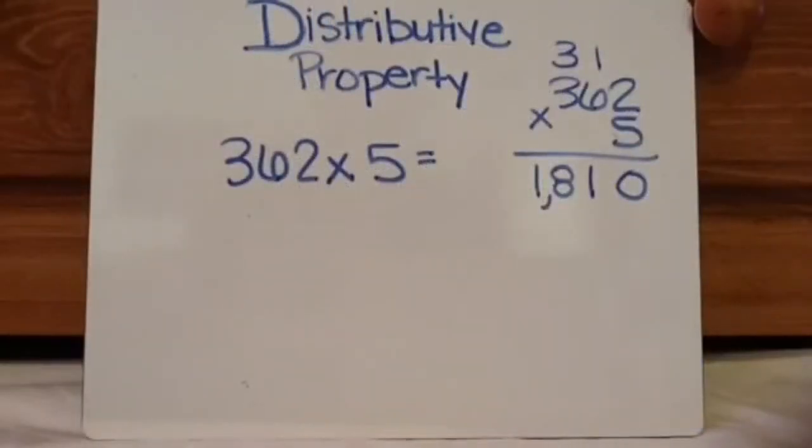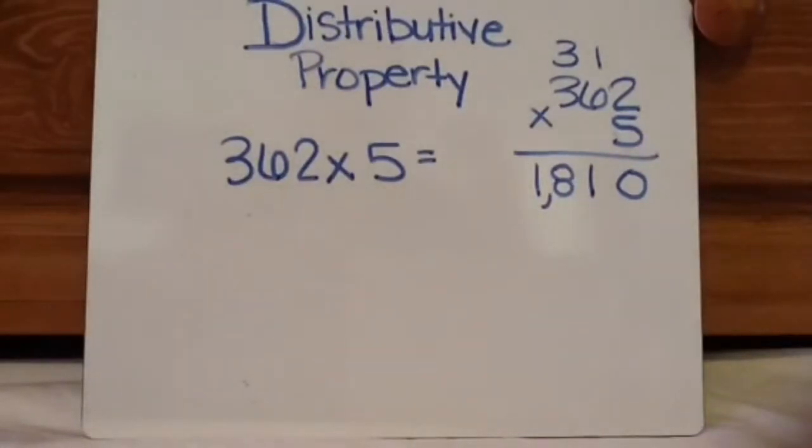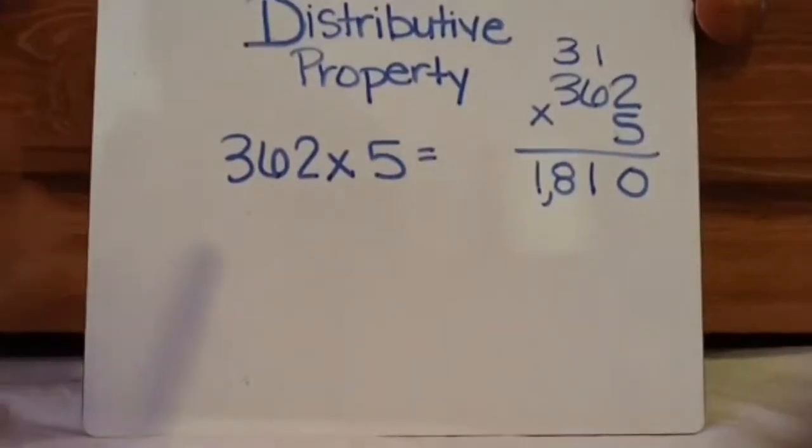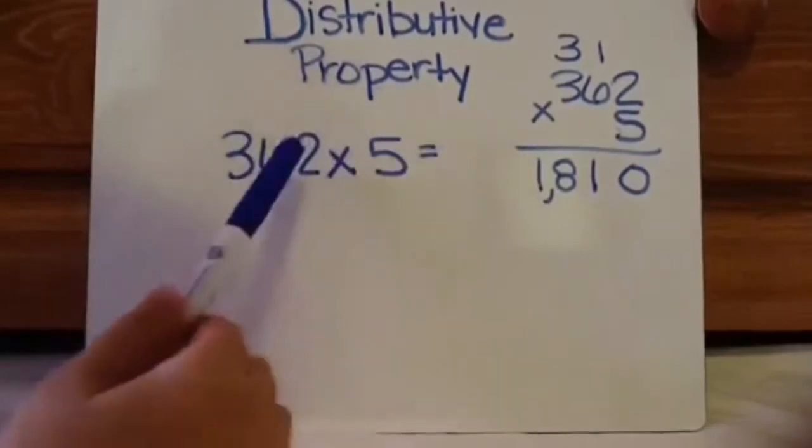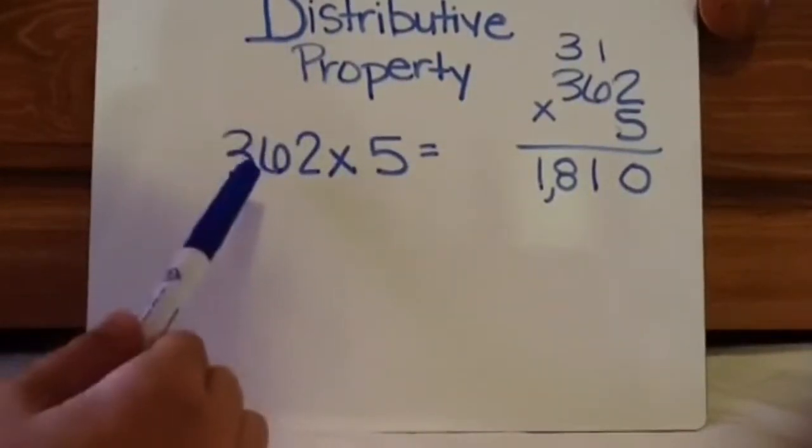I want to start with the distributive property. So the distributive property is breaking apart a number and multiplying it by the other number. So this is the standard algorithm, which you should know how to do from my previous videos. So in distributive property, you're going to actually take this and break this apart using expanded form.